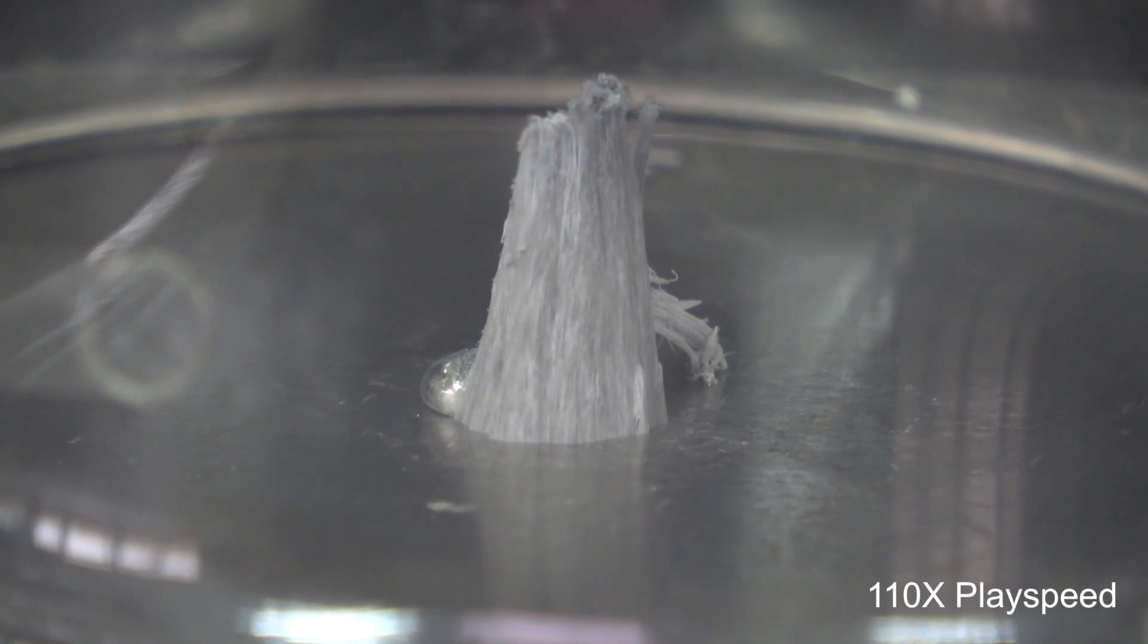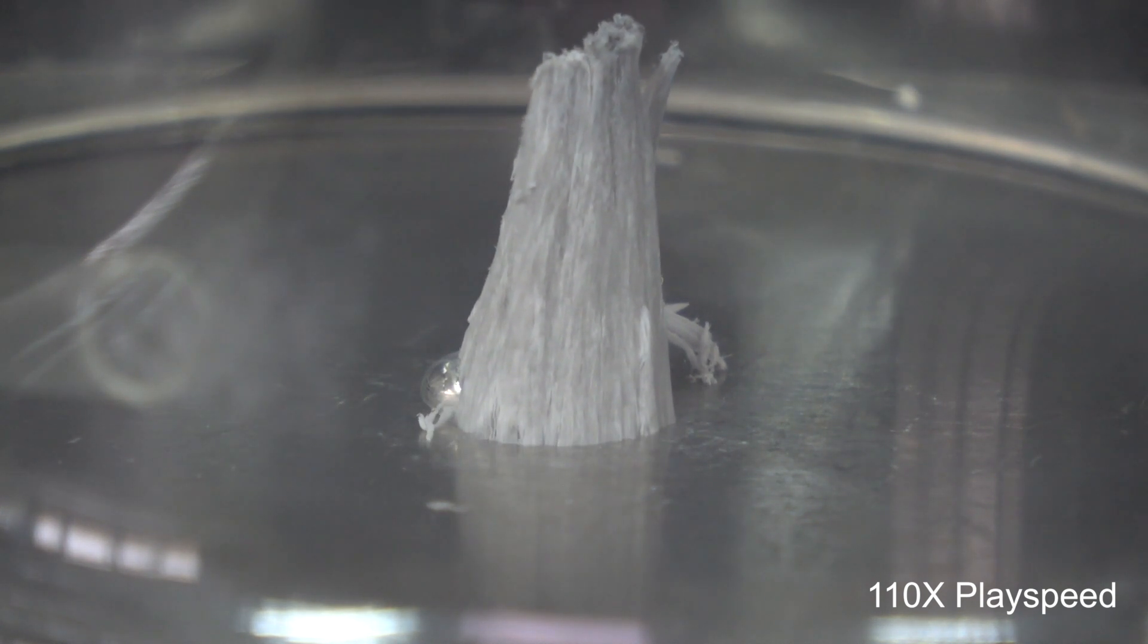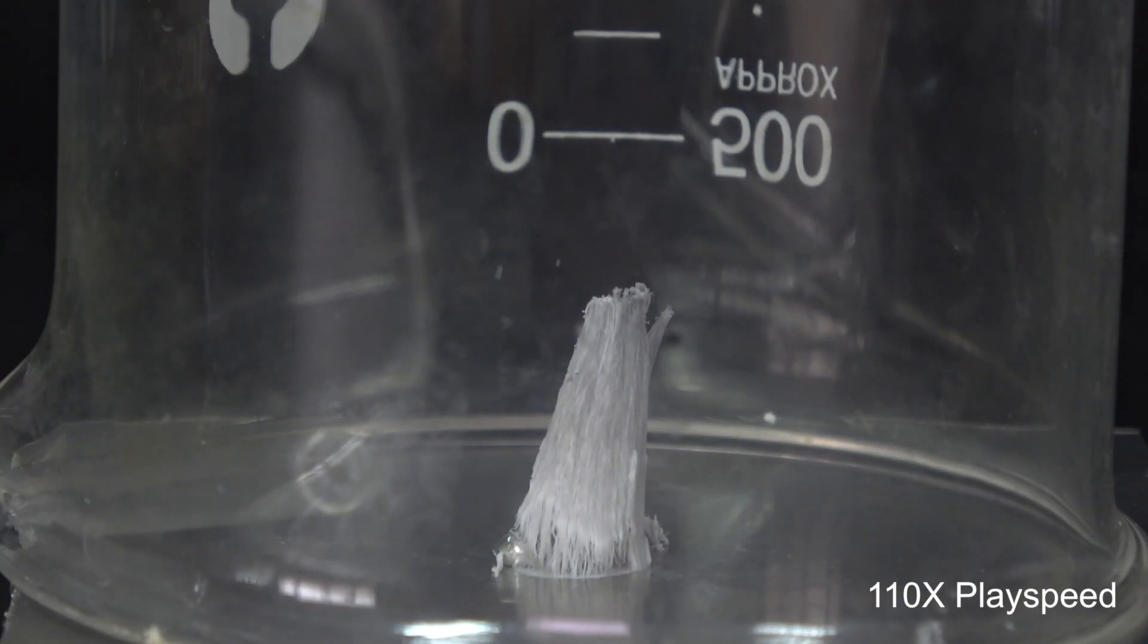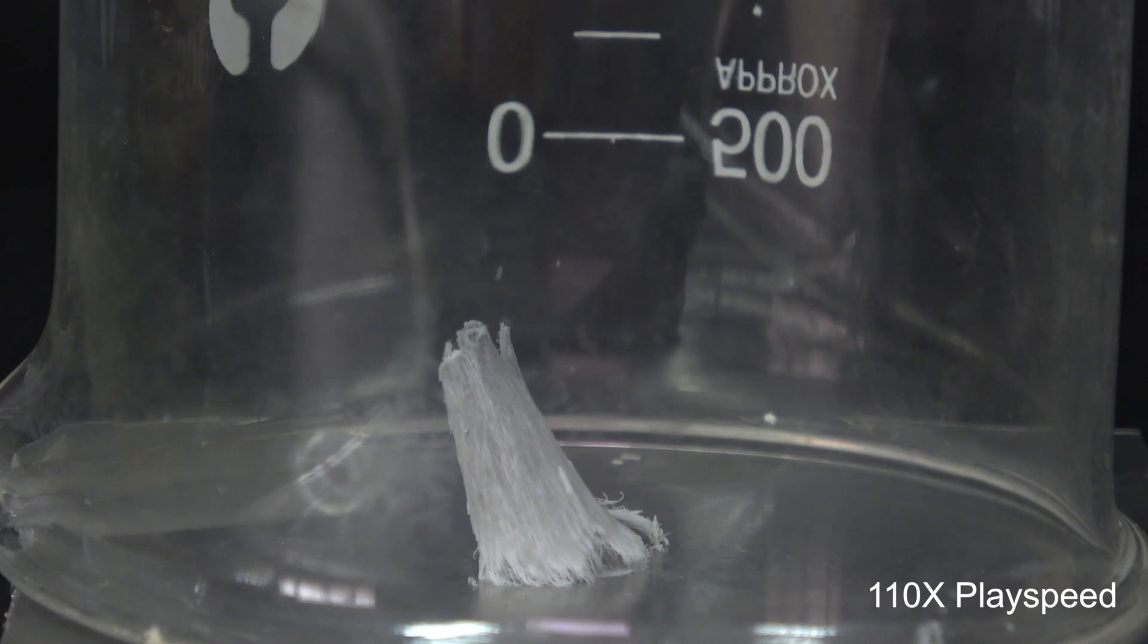Since the mercury was pushed aside and was no longer in direct contact with fresh aluminum, no more amalgam could be formed, thus the foundation of the fiber became weaker and weaker. Eventually, it collapsed upon its own weight.